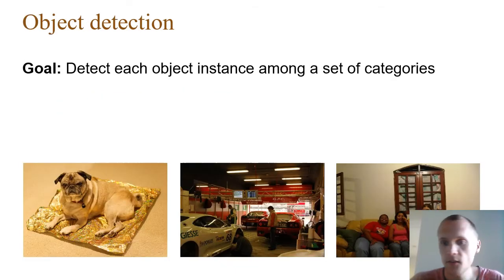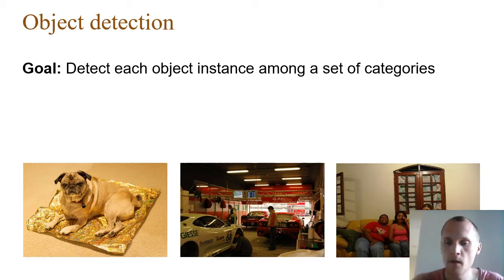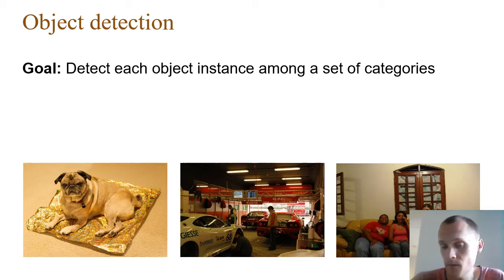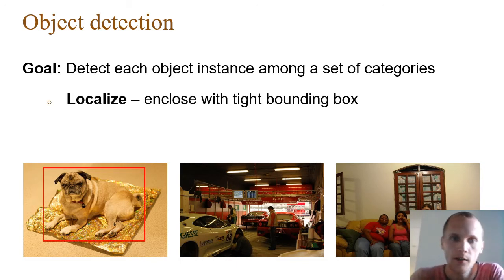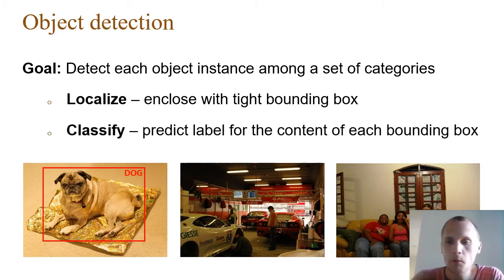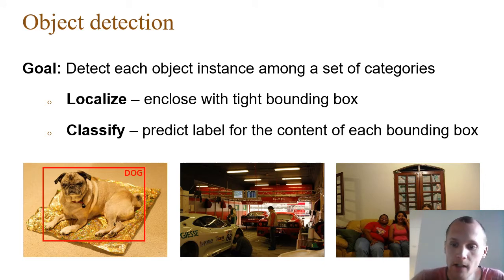In this thesis, a few different perception tasks are considered. The first task is object detection, where the goal is to detect all different objects in an image as well as where in the image they are. This is a two-part thing: first we localize, meaning we draw a bounding box around the objects, and then we classify — we tell what is in each respective bounding box. So in this example, a dog.